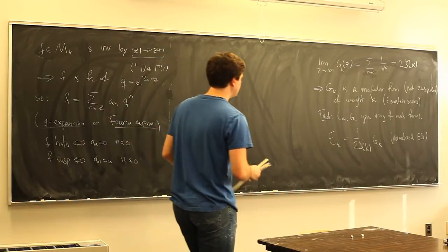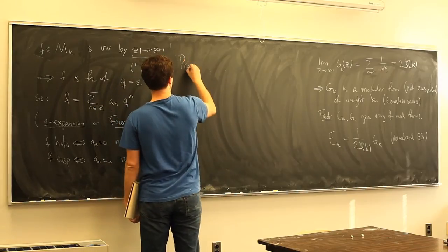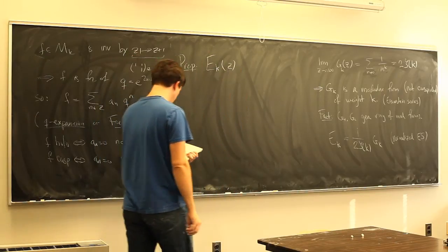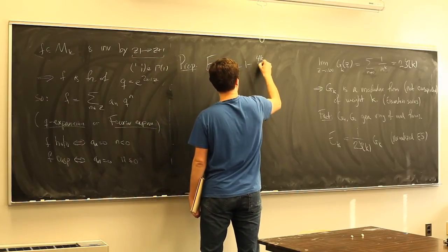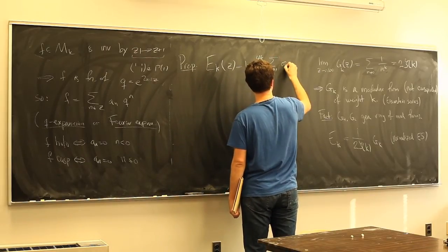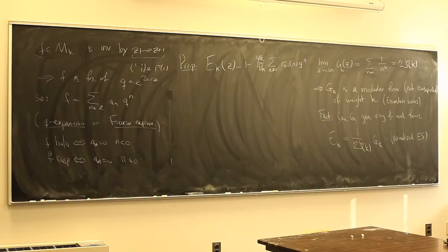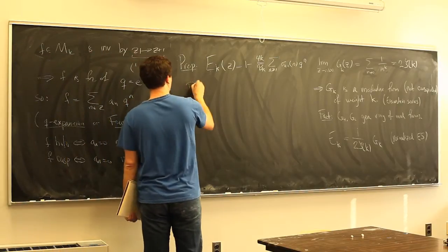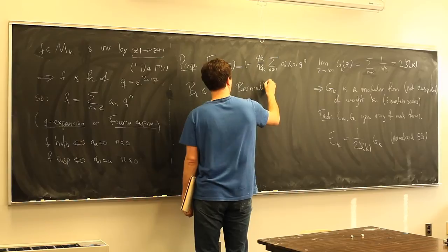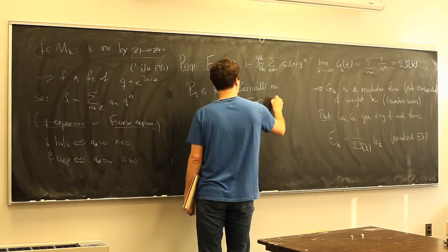The q-expansions of the Eisenstein series are important. The result (which I won't prove) is: E_k(z) = 1 - (4k/B_k) · Σ_{n≥1} σ_{k-1}(n) q^n, where B_k is the Bernoulli number defined by x/(e^x - 1) = Σ B_k x^k/k!, and σ is the sum-of-divisors function.